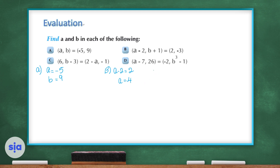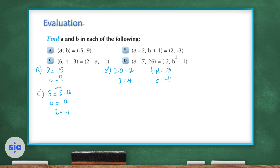Question C: 6 equals 2 minus a. Moving the 2 to the other side gives 4 equals negative a, so a equals negative 4. To find b: b minus 3 equals negative 1, so b equals 2.